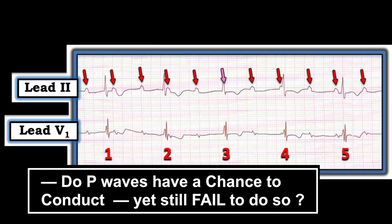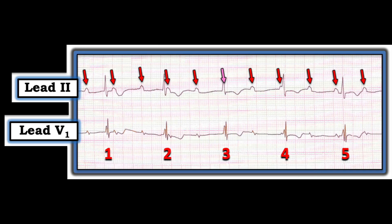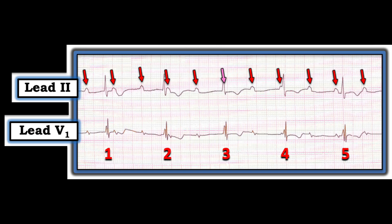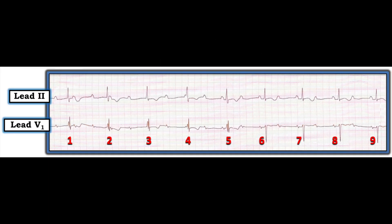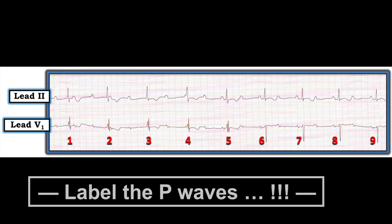If you look at all of these P waves, most of them occur either in the middle of the R-to-R interval or close to the QRS complex, but I don't have P waves occurring at all phases. This P wave right in front of beat number four — there's no way that can conduct; it's way too short to conduct. Let me prove this with the last part of this tracing. Here are the last couple of beats — take a moment to look at this rhythm strip.